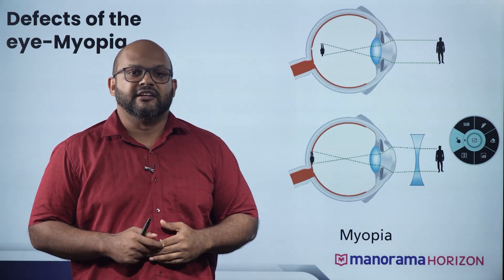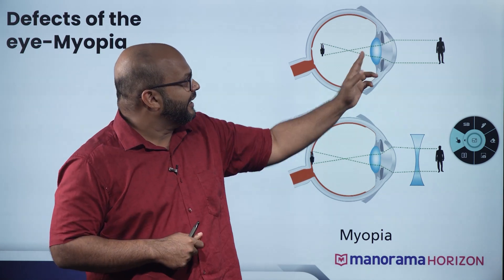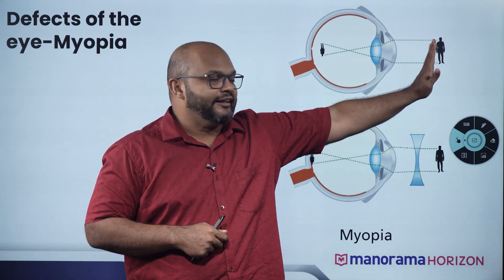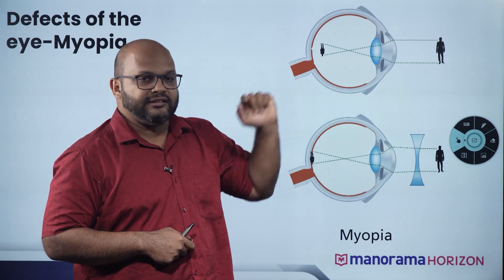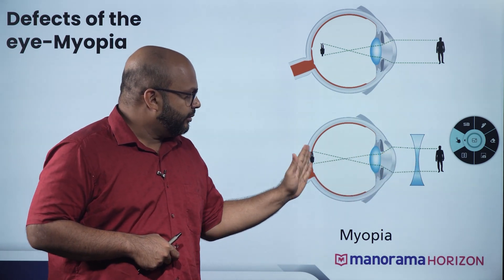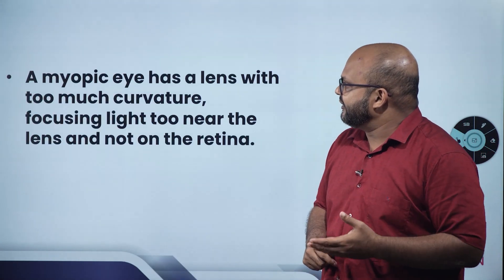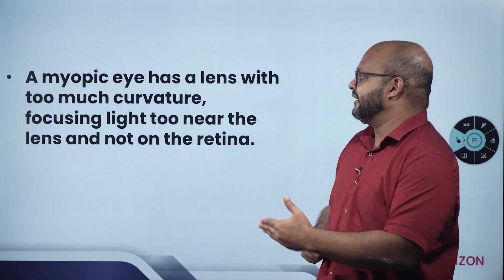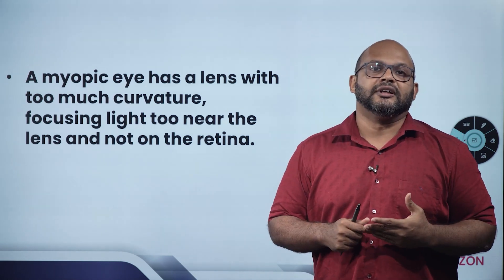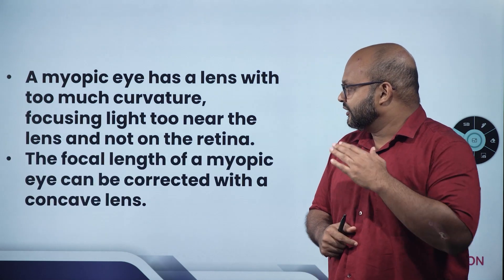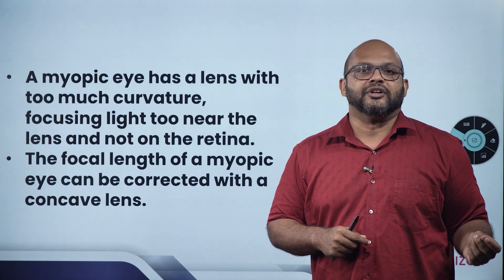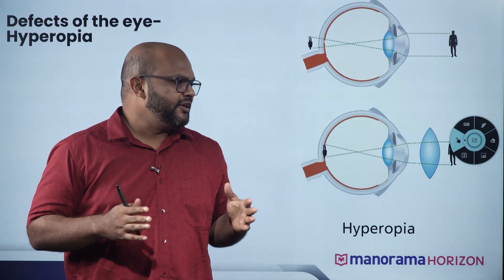Because of this, we don't have a clear image on the retina. To correct myopia, we need to increase the focal length of the lens. A myopic eye has a lens with too much curvature, focusing light too near the lens and not on the retina. The focal length of a myopic eye can be corrected with a concave lens.